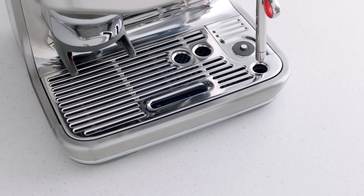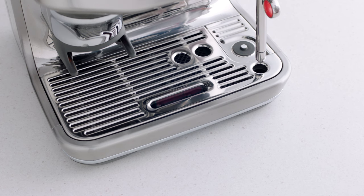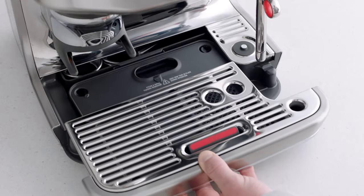The drip tray should be removed, emptied, and cleaned periodically with warm water, particularly when the exclamation mark indicator shows. Remove the grill from the drip tray.